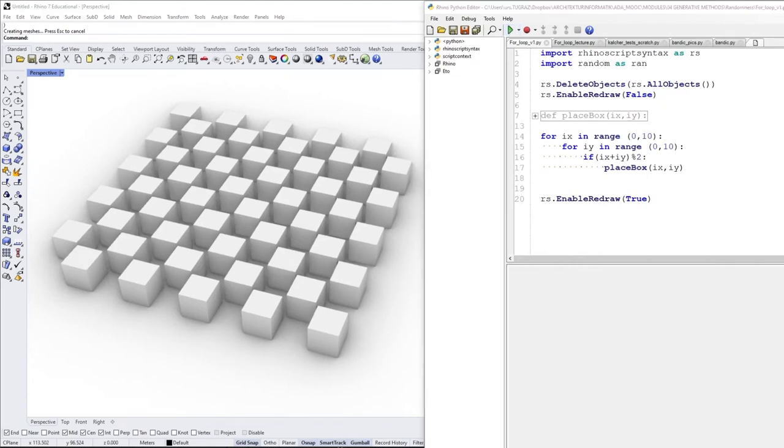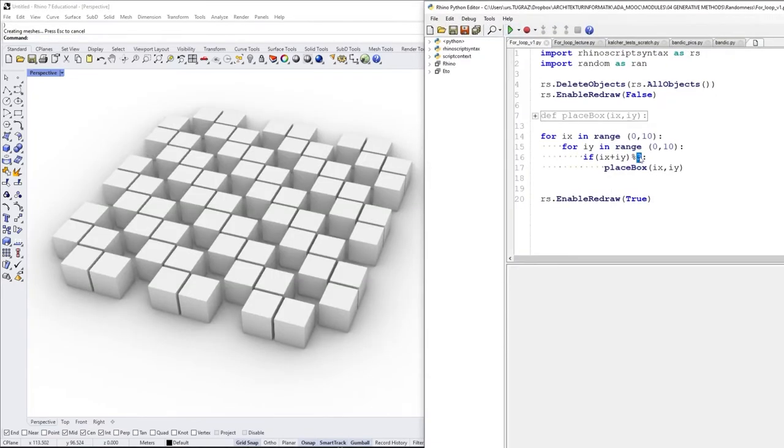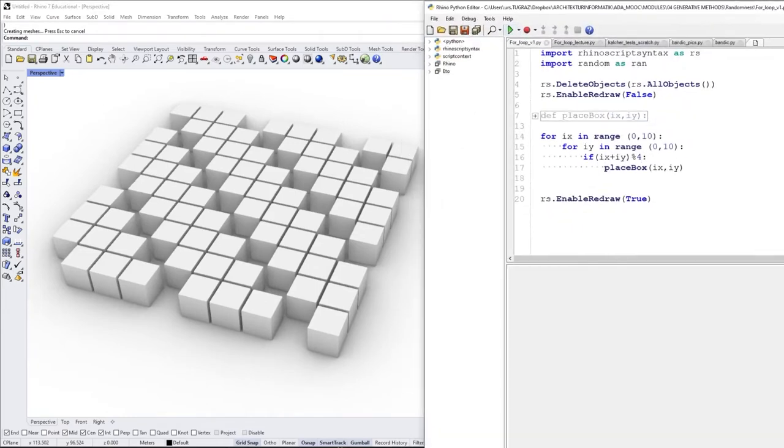However, if the conditional is true, in other words, when the leftover is 1, hence for all uneven numbers, my little algorithm places a box at the according X and Y coordinates. The result is this array, a checkerboard.